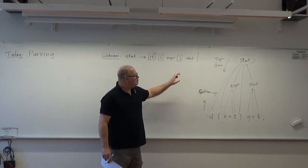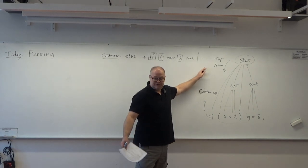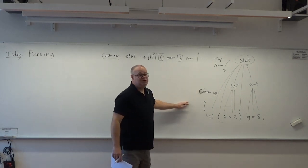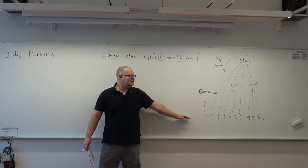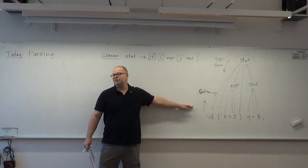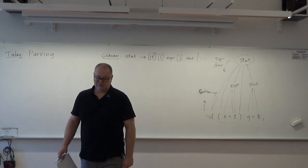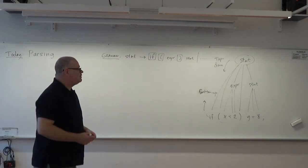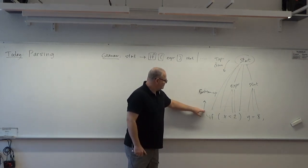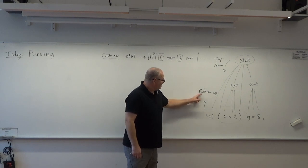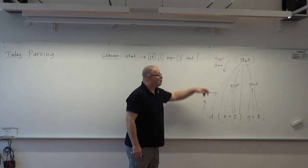If you write a parser by hand, you usually use top-down because it's simpler. If you have a tool like Bison, a parser generator, it typically generates a bottom-up parser — more difficult to do, but as a tool it can work as much as you want, and you have fewer constraints on the grammar. But today we'll be top-down.